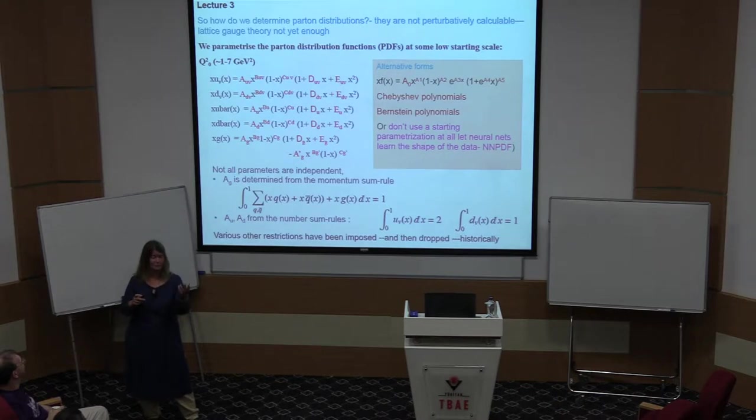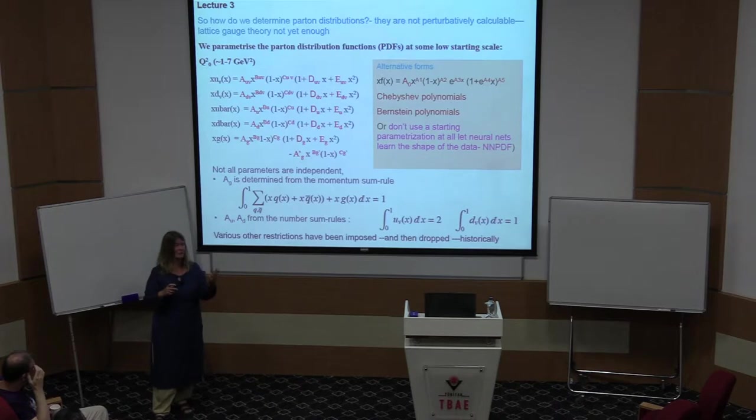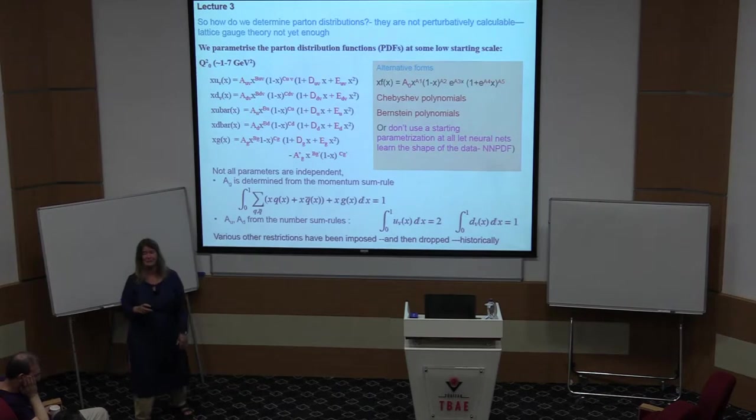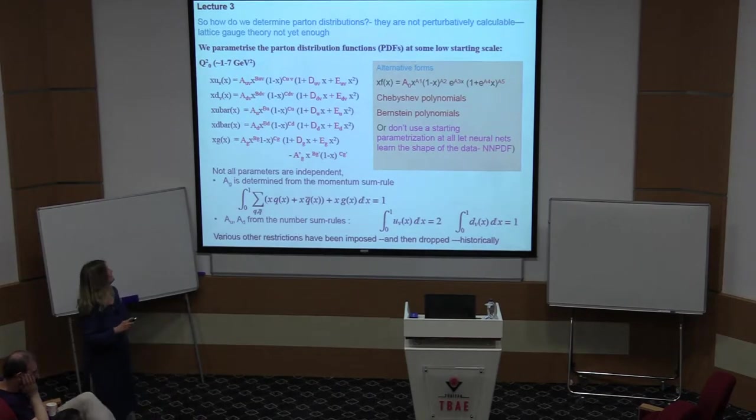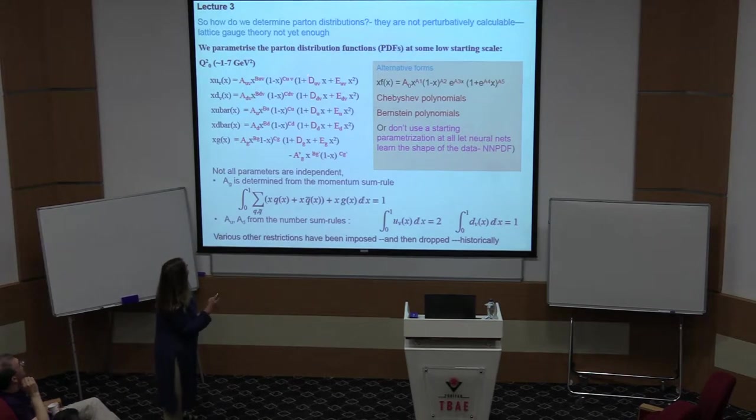So this is one choice that was originally chosen by MRST. And CTECH began with this as well. And then CTECH decided to generalize it and put exponentials in there. So not to be outdone, MRST, who went through various changes. They had made the mistake. They called their PDF after the people in it. So it was Martin, Robert, Sterling, and Thorne. And the trouble is that, you know, first of all, Robert's retired and Sterling left the collaboration before his unfortunate death last year. And so it's called MMHT at the moment. But in fact, H is still there, but one of the M's has left. And, you know, what it's going to be in the future, we don't know. You have to keep track of this.